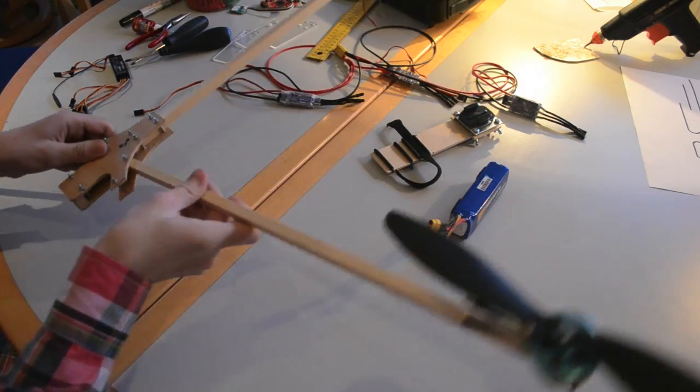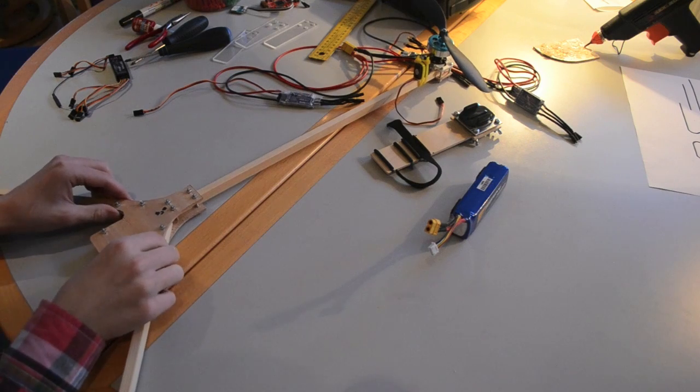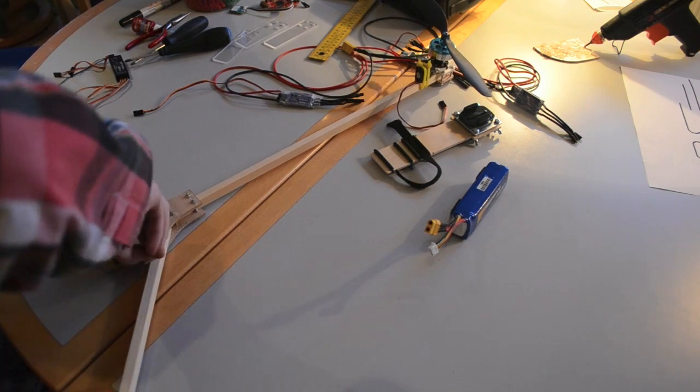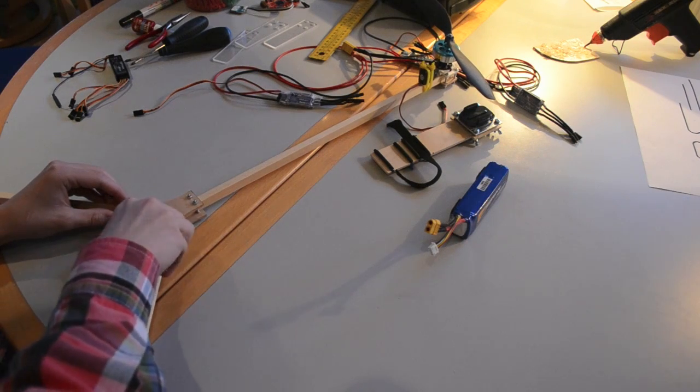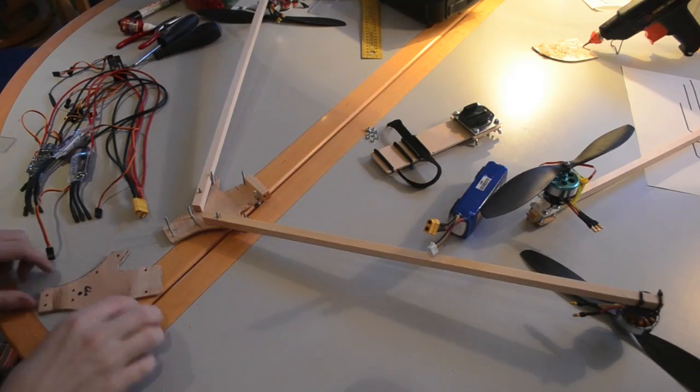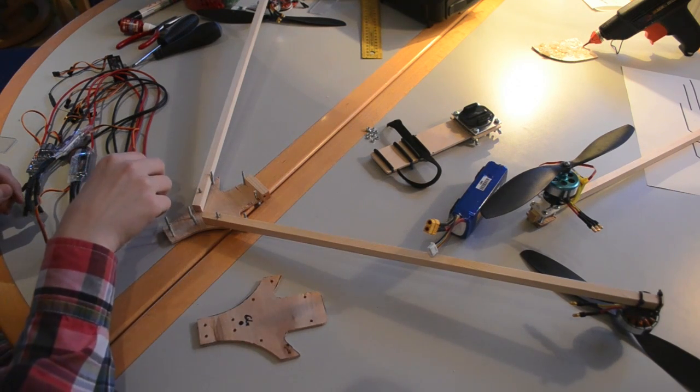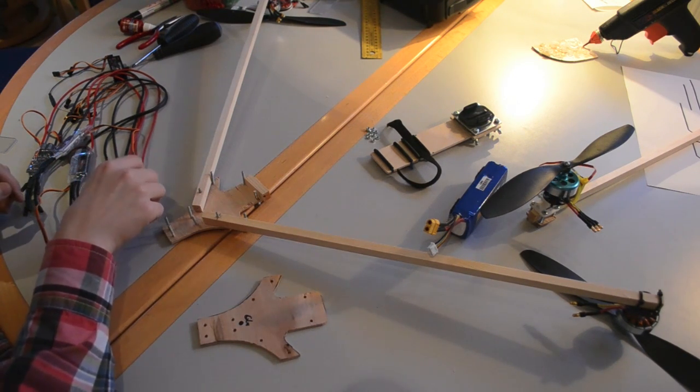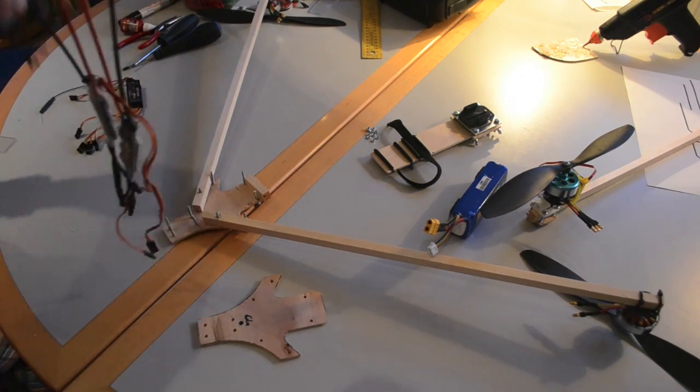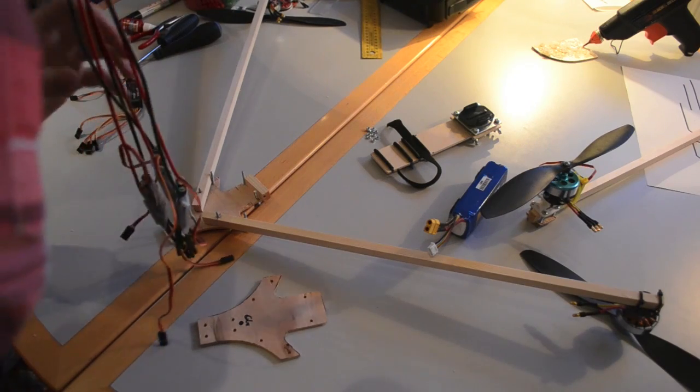What we're going to do is spread this out and mount the ESCs. But first, we're going to take the top plate off. Alright, we've now taken the top plate off. The first thing we're going to do is mount the ESCs.